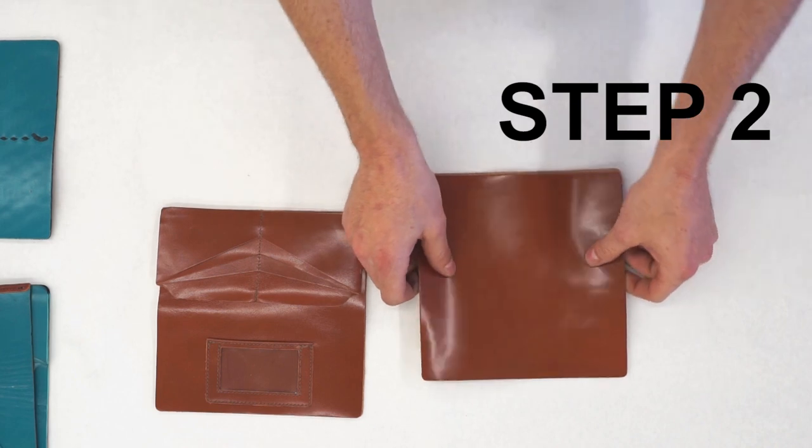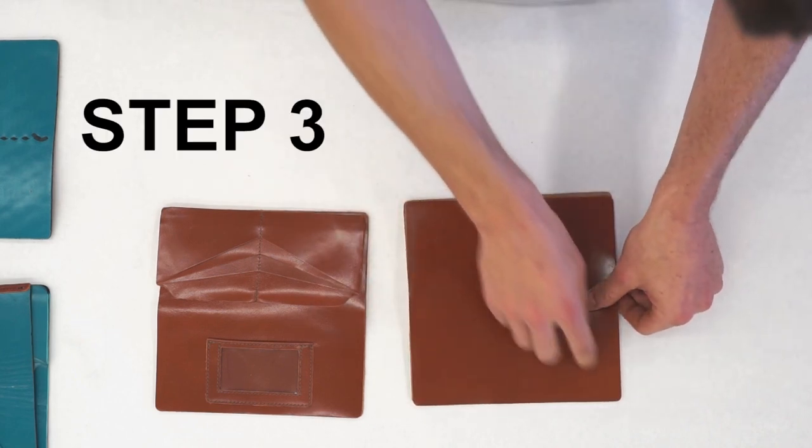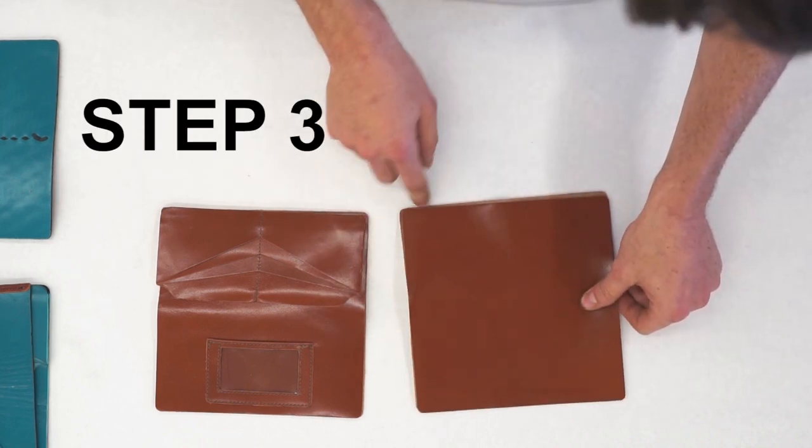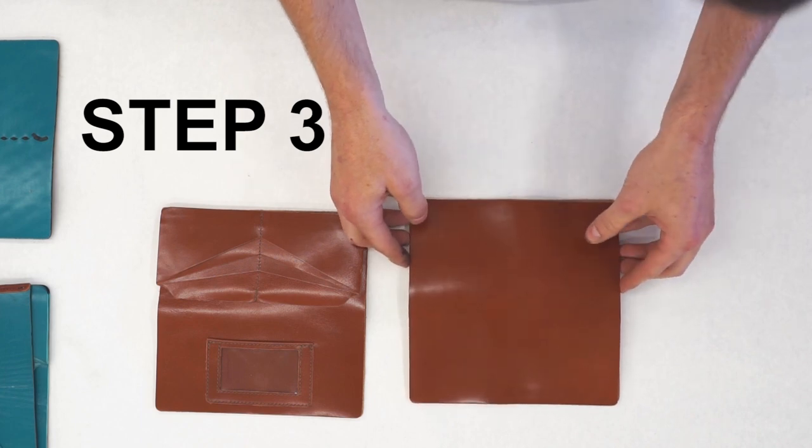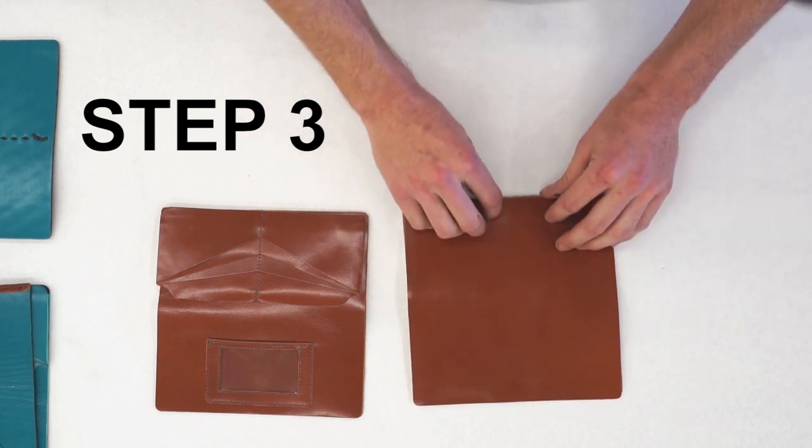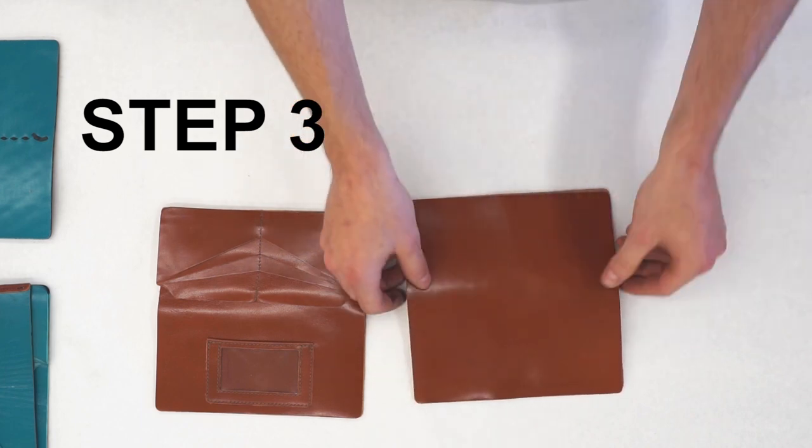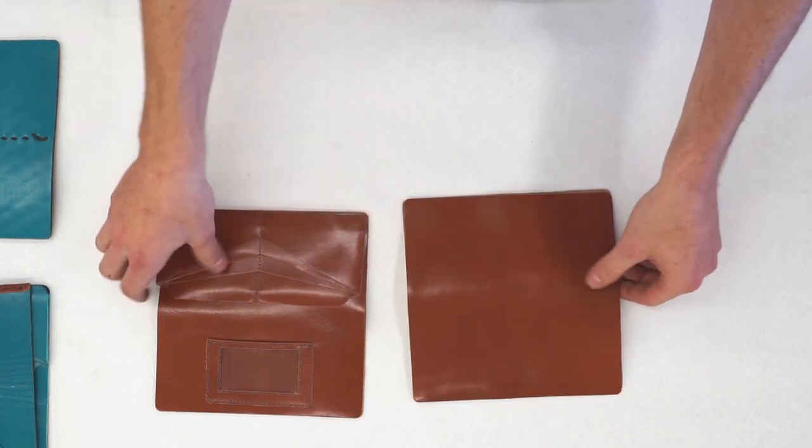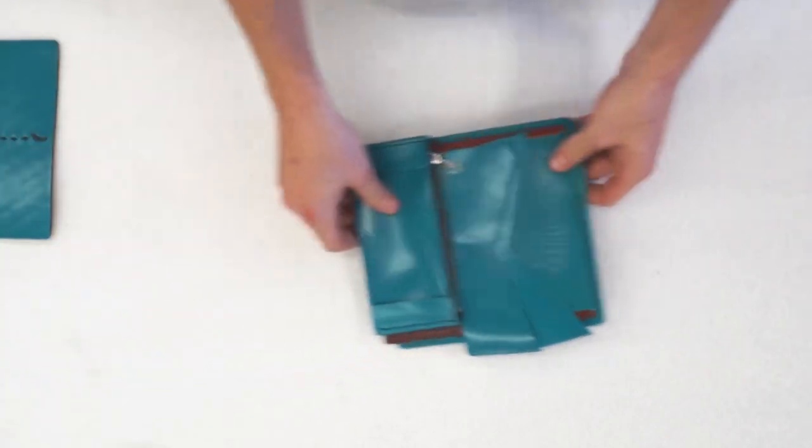Once you have this one glued, you'll skive opposing edges of the clutch back with the kid skin on it and roll the edges a quarter inch on both sides, and that will bring us to this stage.